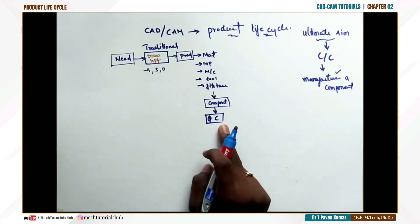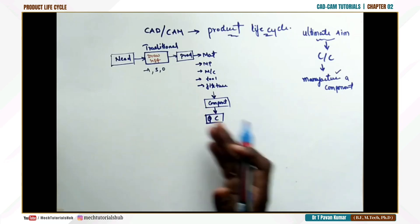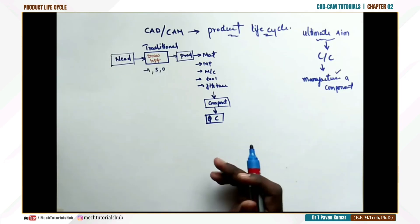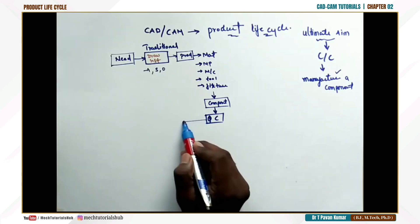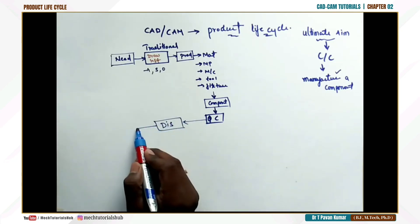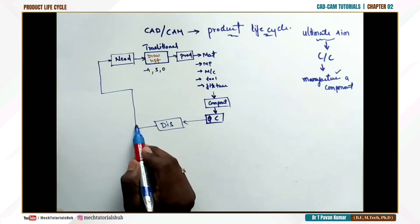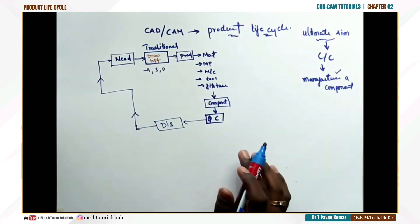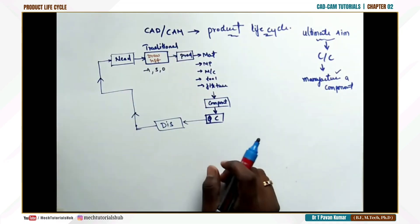If quality checking revealed that the product would not work in real time, then everything done in the past six months or a year for that project was wasted. After quality checking they would dispatch to the customer. This entire process used to be cyclic, and everything was done manually with no software available — that was the traditional product cycle.